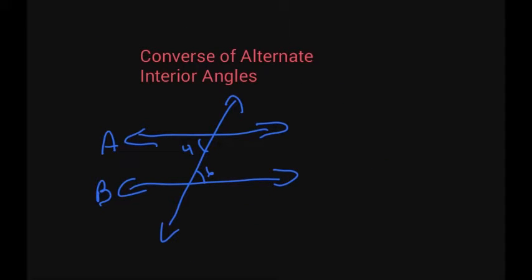Now we have the converse of alternate interior angles. Angle 4 and angle 6 are congruent, shown by those little marks. Because those two angles are congruent and they're alternate interior, it makes A and B parallel.